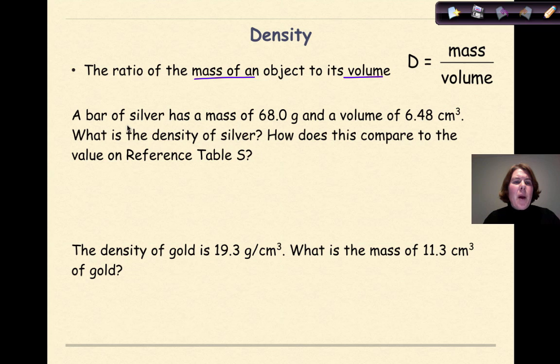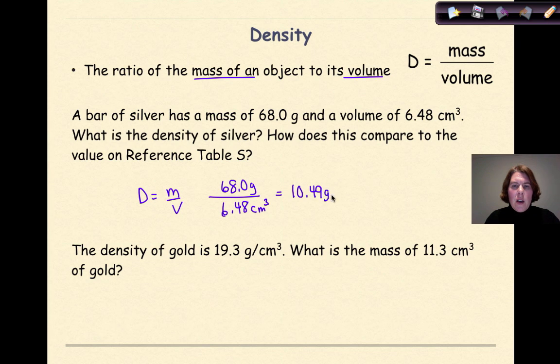So let's look at an example. A bar of silver has a mass of 68.0 grams and a volume of 6.48 centimeters cubed. What is the density of the silver? So density is going to equal mass over volume. I'm going to write my mass on top, 68.0 grams, I'm going to divide that by the given volume of 6.48 centimeters cubed. And when I work this out in my calculator, it's 10.49 grams per centimeters cubed. But I take a moment and say, here we have three significant figures, here we have three significant figures. Therefore, my answer should have three significant figures. So when I round this to the appropriate number of significant figures, it should be 10.5 grams per centimeters cubed.